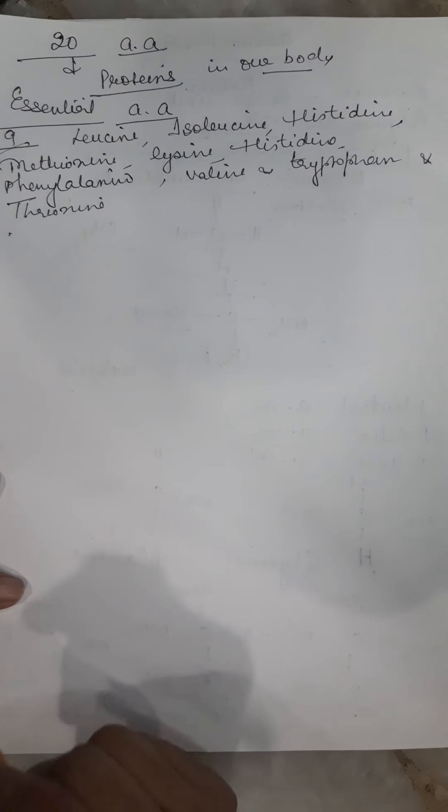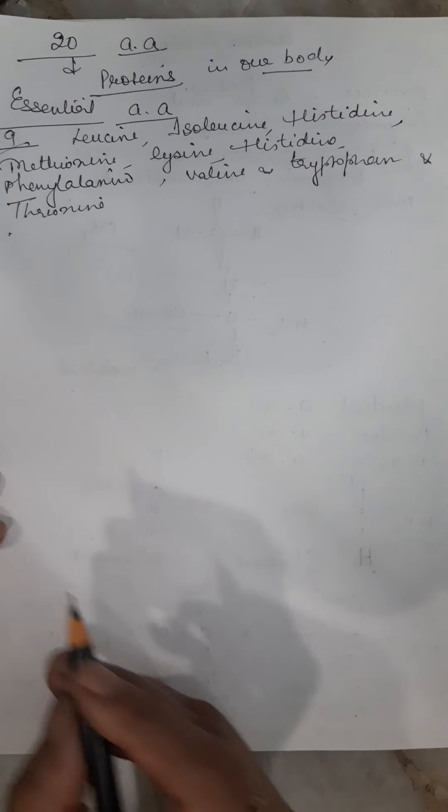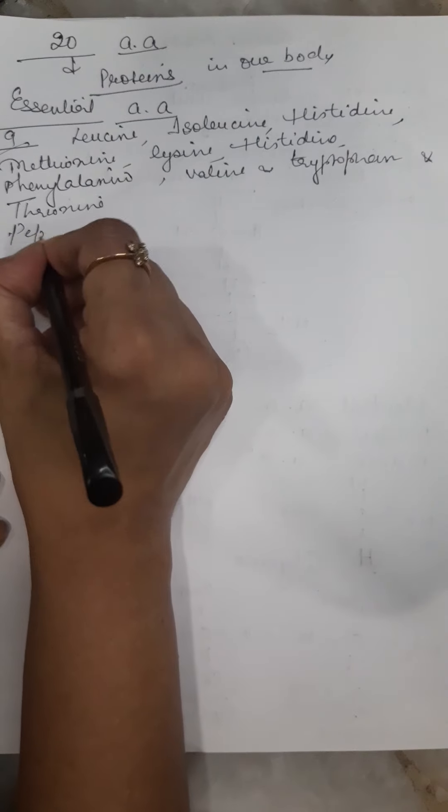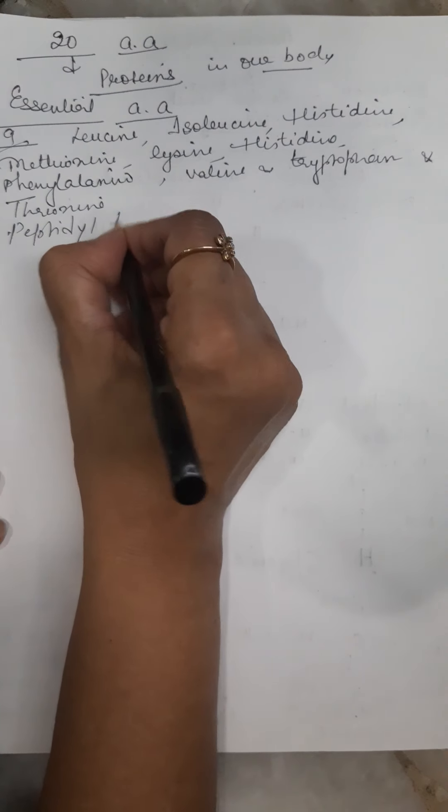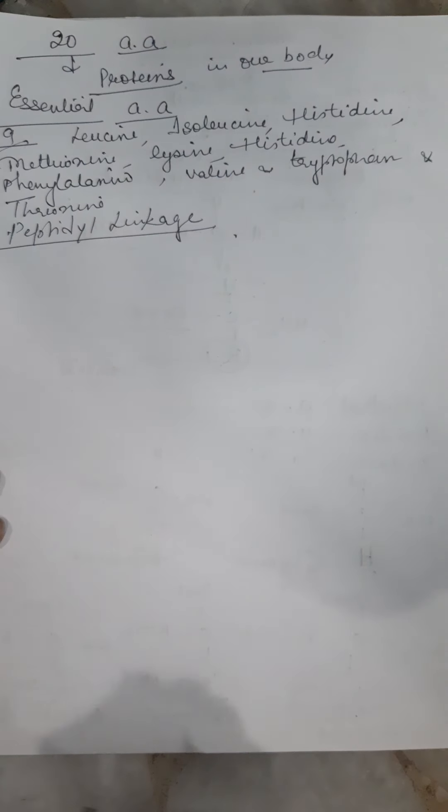Now, next thing. How do these monomers combine to form a polymer protein? By peptidyl linkage. What is this peptidyl linkage?